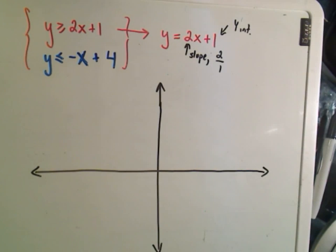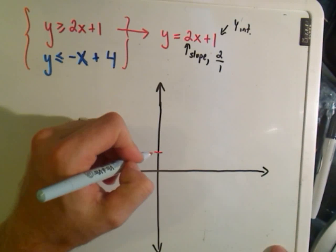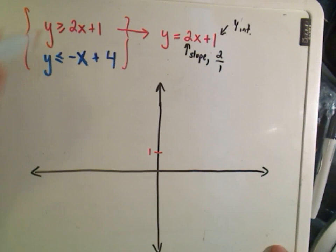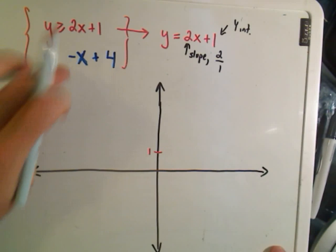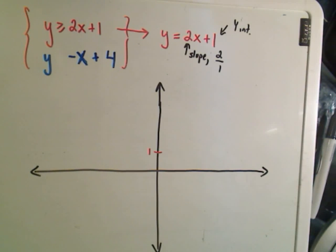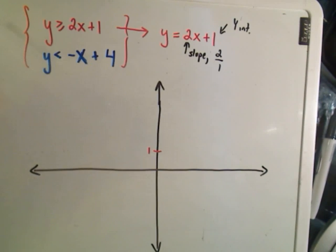Okay, so when I go to graph this one it says there's going to be a y-intercept of positive 1. When it's greater than or equal to, they'll make the line solid. If it's just less than, and maybe I'll make my other part just less than, they'll make it dashed.